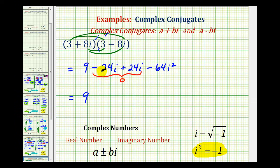So we'll have nine. Again, this was zero. Minus 64. And then i squared is equal to negative one. So this becomes nine plus 64, which is equal to 73.